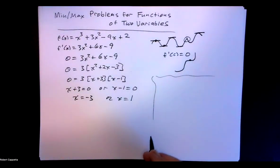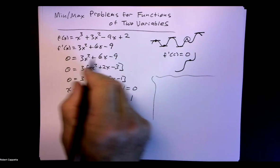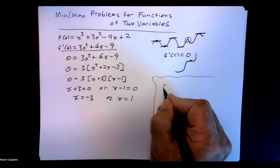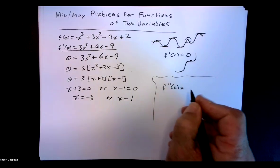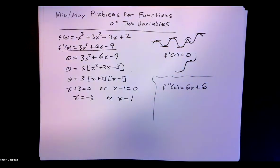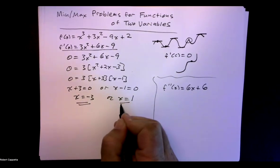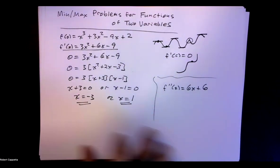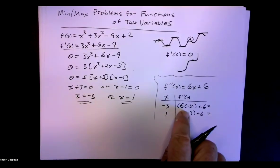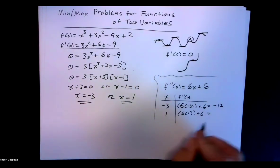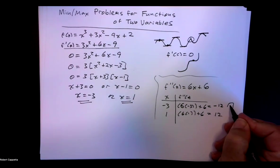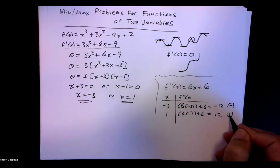How does this apply in this problem? What is the second derivative here? Looking at the first derivative, f prime of x is 3x squared plus 6x minus 9. The second derivative is going to be 6x plus 6. Then we're going to plug these critical values into that second derivative to see whether the function is concave up or concave down. Looking at negative 3: negative 18 plus 6 is negative 12. And for x equals 1: 6 plus 6 is positive 12.